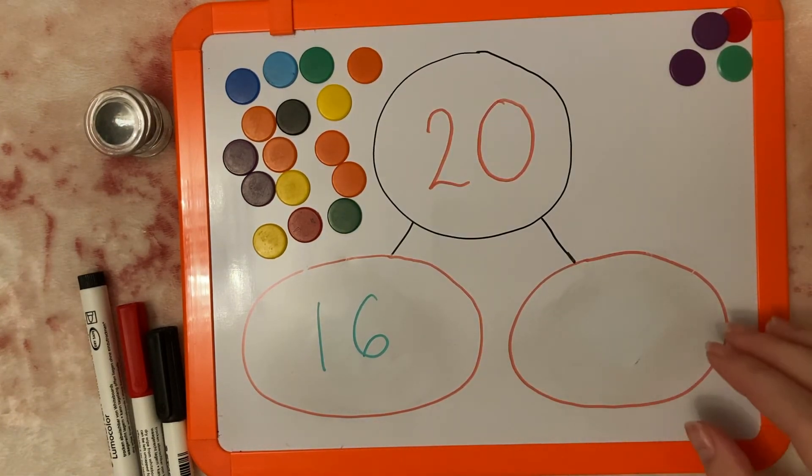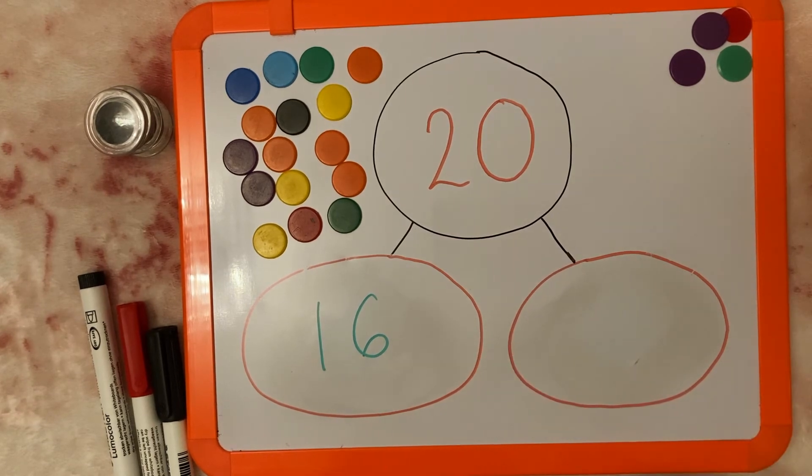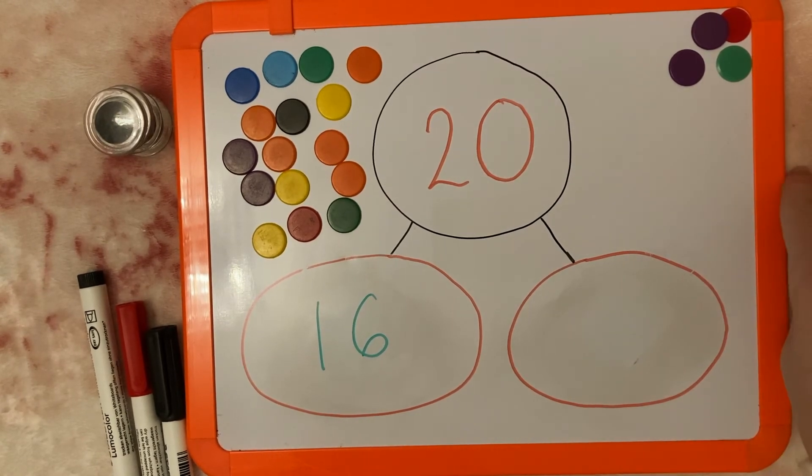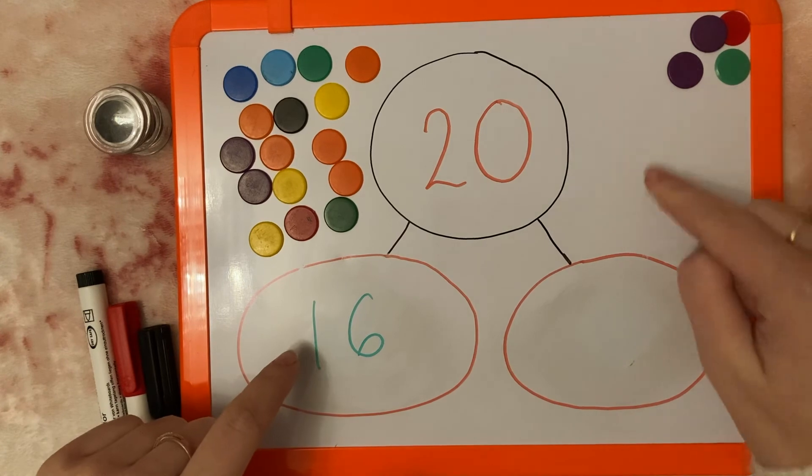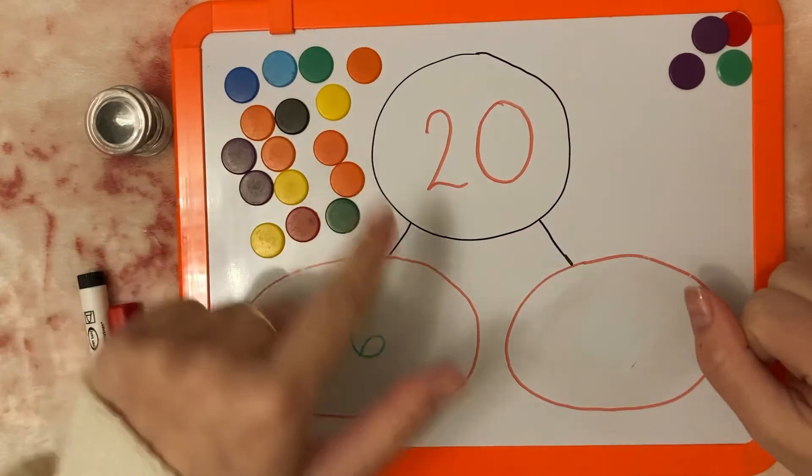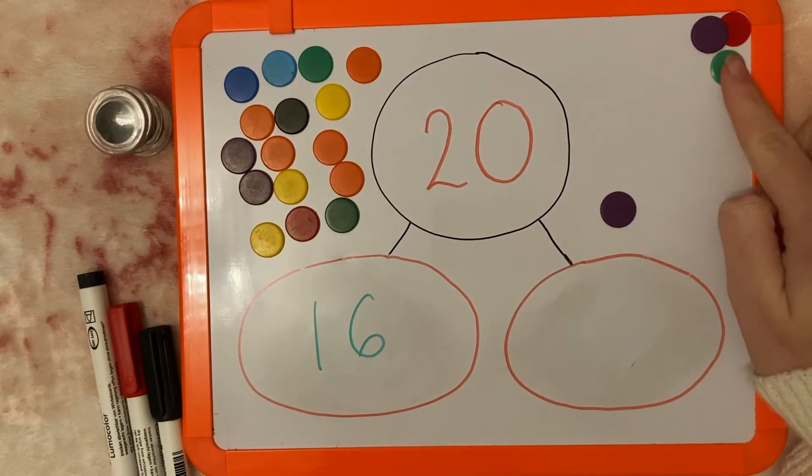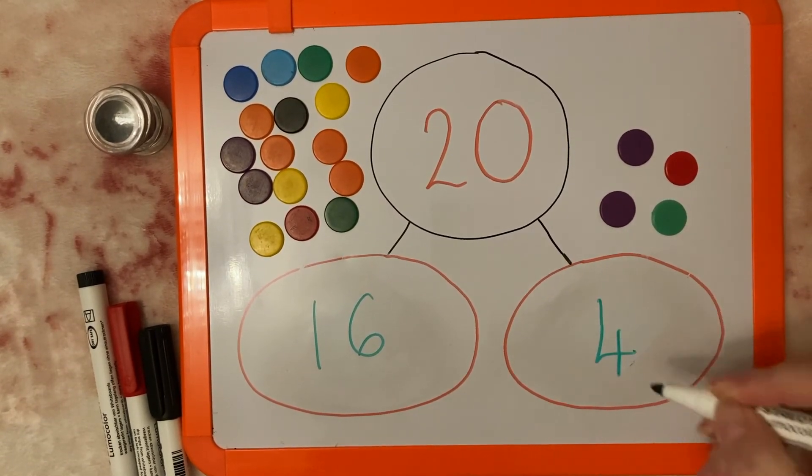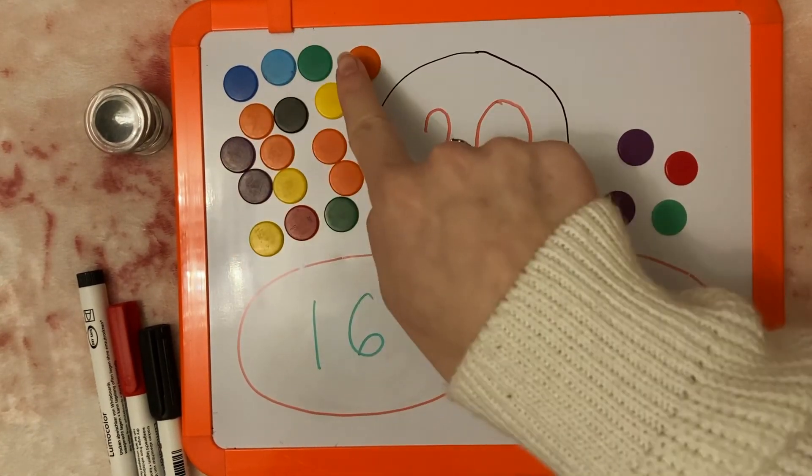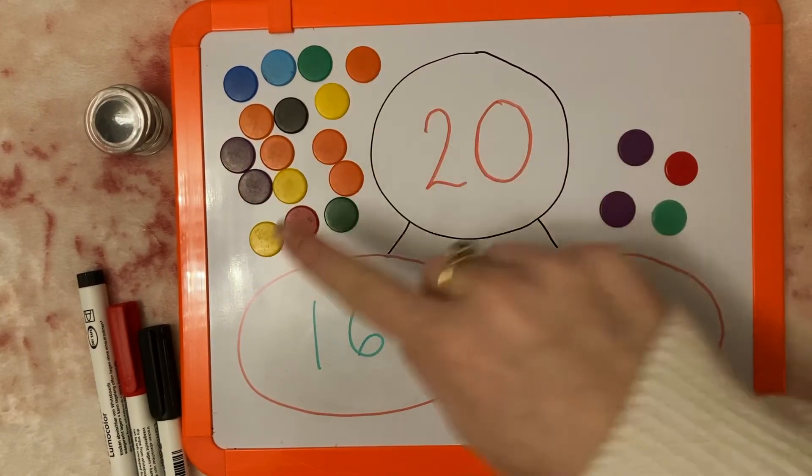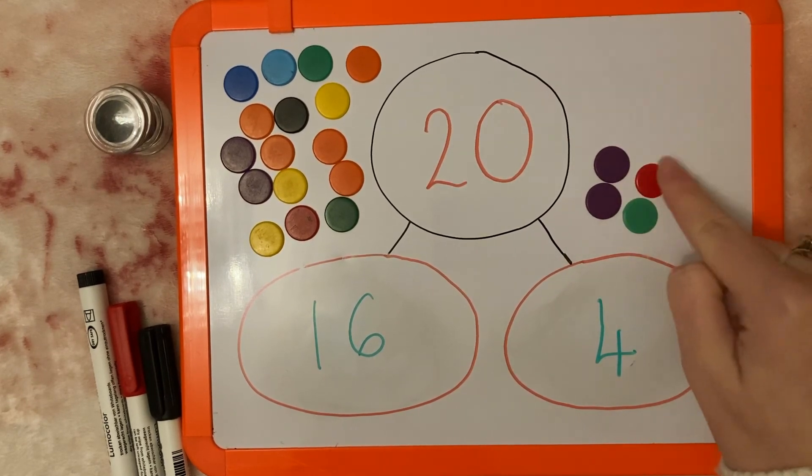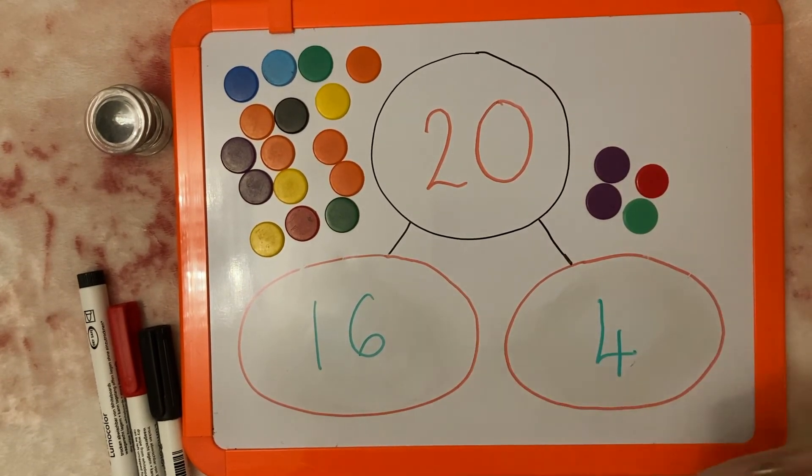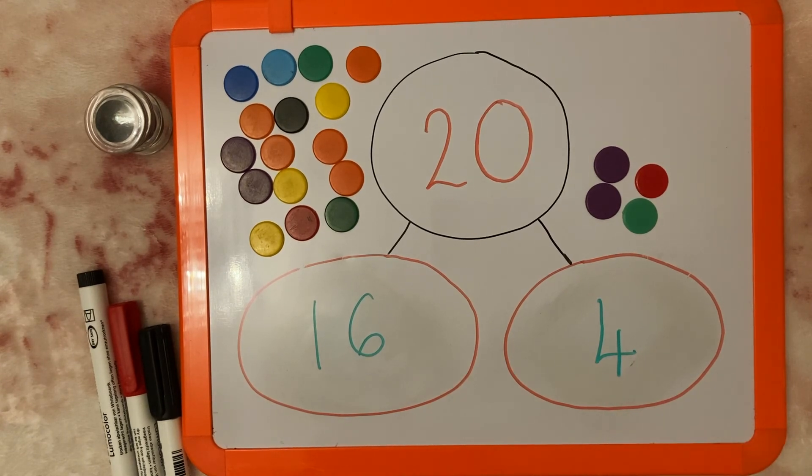So now we need to work out how many we would add to 16 to get 20. As I'm sure you've already done, pause the video here and see if you can have a go. Okay. So now we're going to count on from 16. I'm going to add some more counters until I get to 20. So we've got 16, 17, 18, 19, 20. I've added on 4. So if we've got 16 there, let's check again. 16, 17, 18, 19, 20. So 16 and 4 is an example of a number bond to 20.